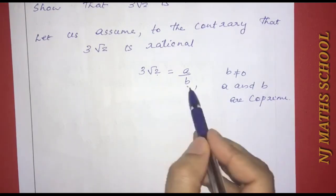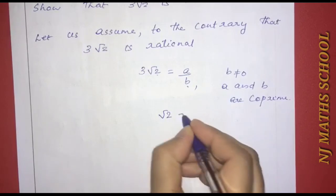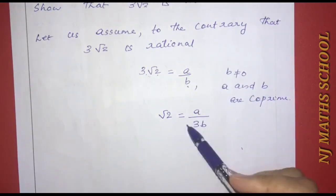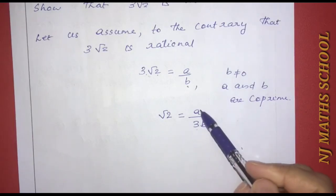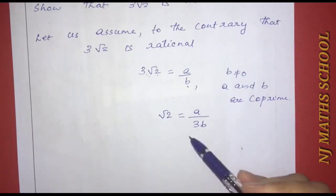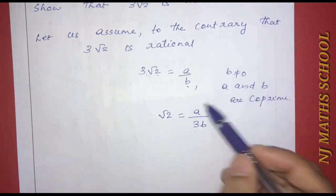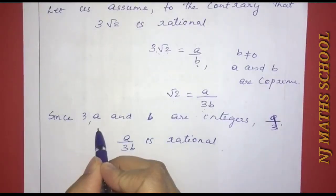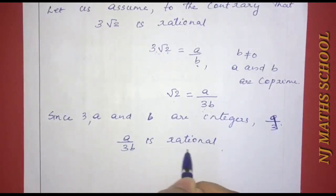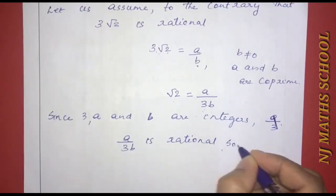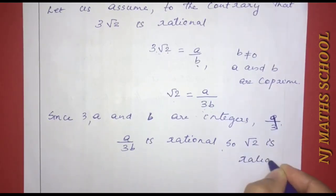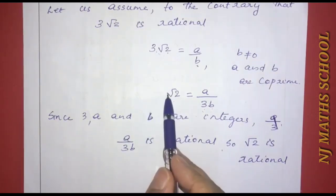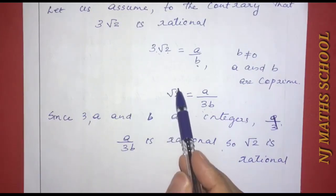Dividing both sides by 3, we get root 2 equals a by 3b. Since 3, a and b are integers, a by 3b is a rational number, which would mean root 2 is rational.